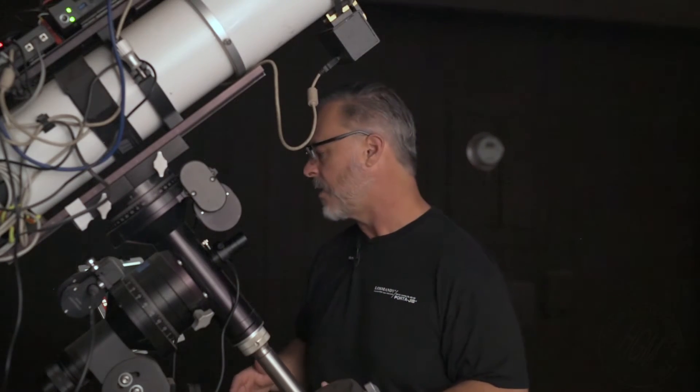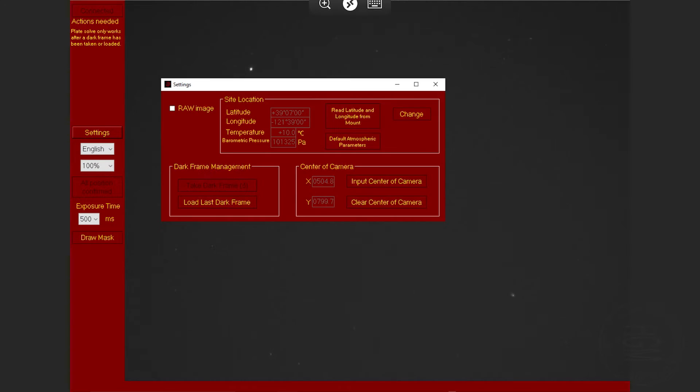It does say there's an action needed and we need to do a dark frame. So let's go ahead and press settings. And we're going to wait for this to say take a dark frame.